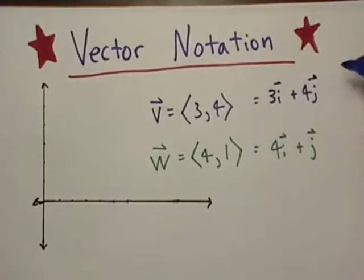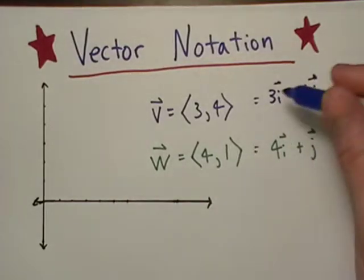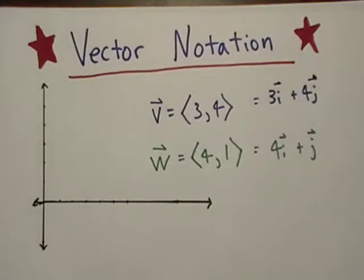The i's and j's are unit vectors. i means 1 over to the right, and j means 1 up on the y-axis. There's also k, which we'll get into when we do 3D.